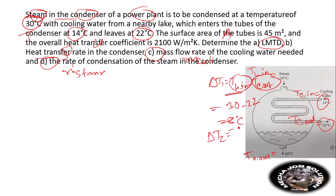ΔT₂ equals T steam out minus T cooling in, which is 30 minus 14, giving us 16°C.